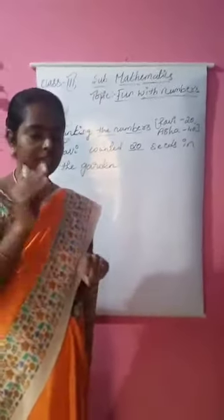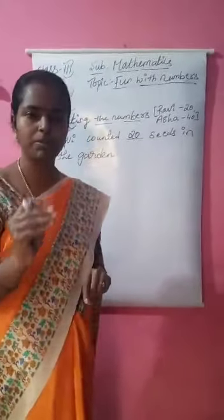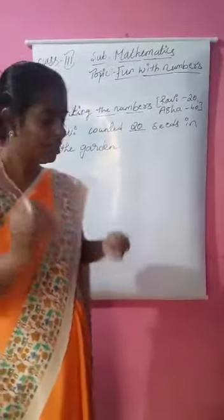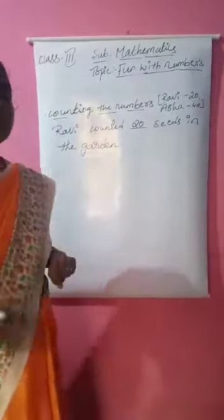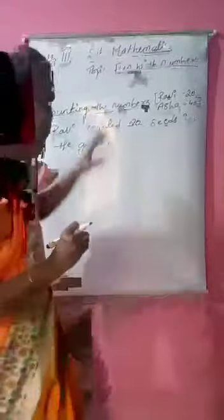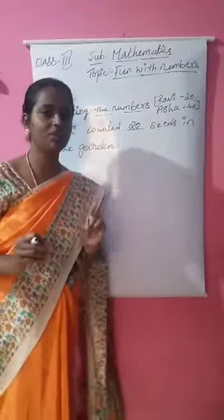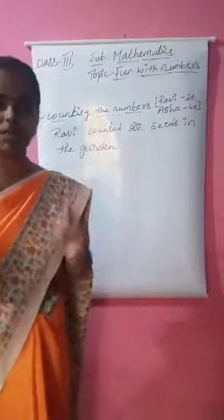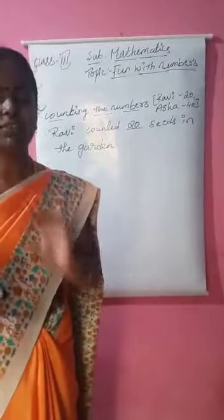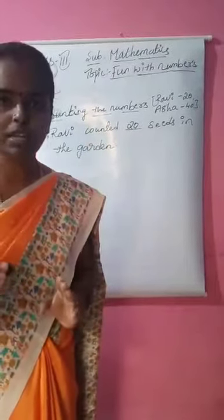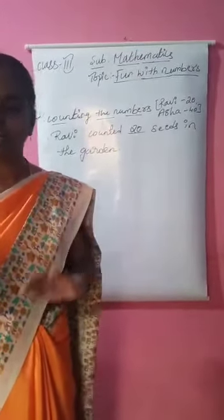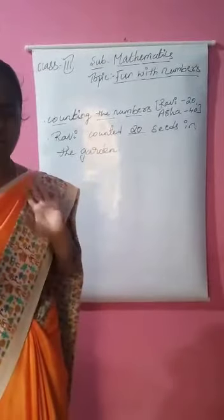I will be giving you the notes. Counting numbers means how you will be counting — one by one. That is: one, two, three — like that. You will have to count the numbers one to fifty, one to hundred. Like that, you have to count.